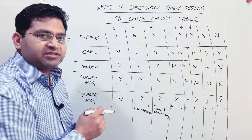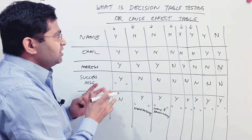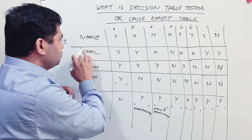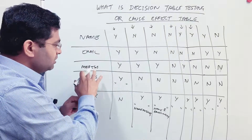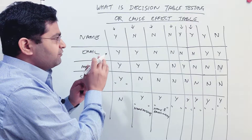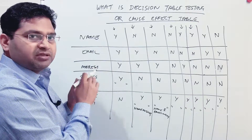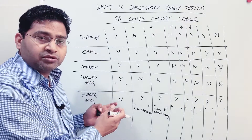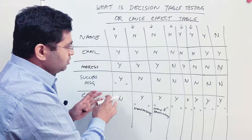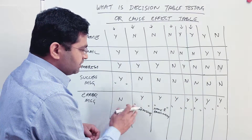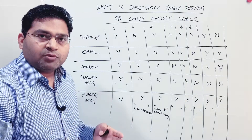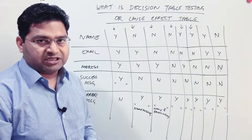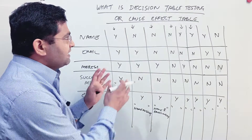To create a decision table or cause-effect table, you get the details of all the rules, put them into rows, and then based on those inputs — whether each input is present or not — you define what the required output is, based on the requirement. Once you define all outputs based on the requirement, those are the tests you need to perform to ensure better and good coverage of the modules or software you are testing.